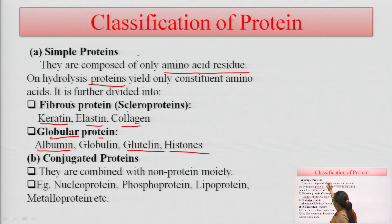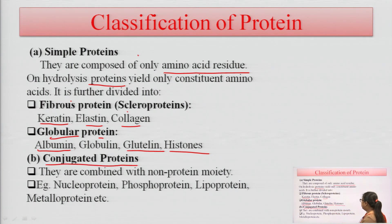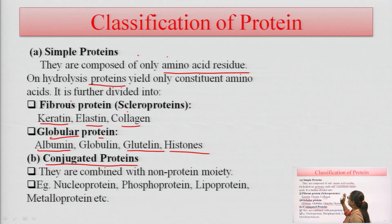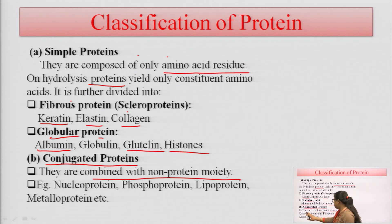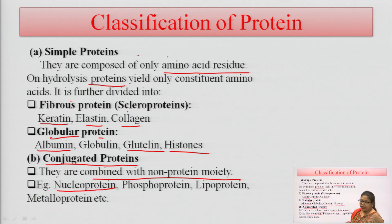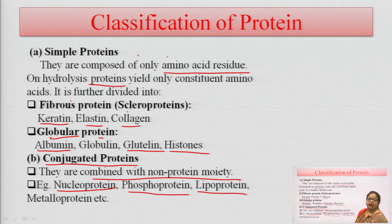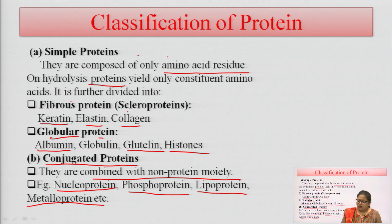The second type is conjugated proteins, which are combined with a non-protein moiety, also known as a prosthetic group. Examples include nucleoproteins (having nucleotides in their structure), phosphoproteins (having phosphate), lipoproteins (having lipid), and metalloproteins (having metals in their structure).